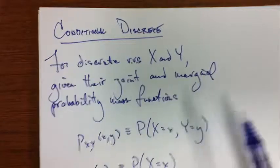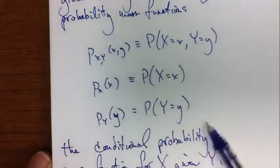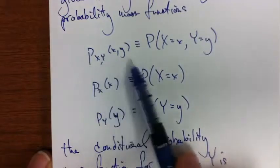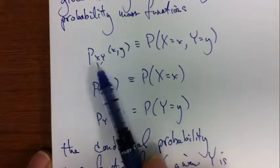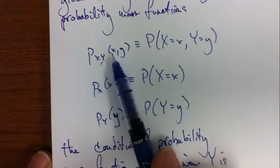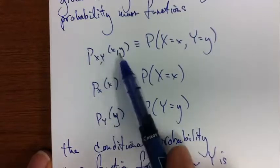Now, given their marginal and joint probability mass functions, that is, all this represents is the probability that the random variable x takes on the value of little x and the probability that the random variable y takes on the value of little y.